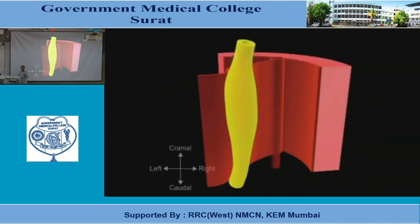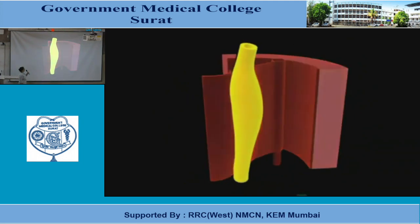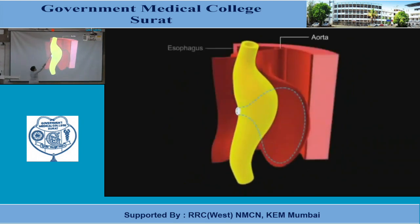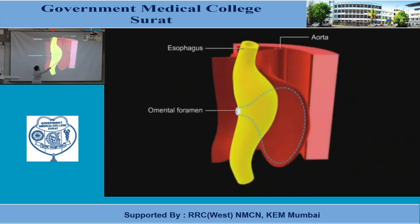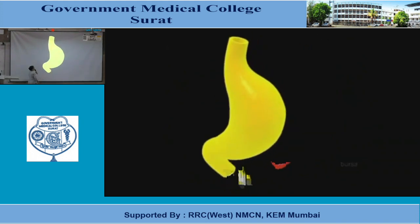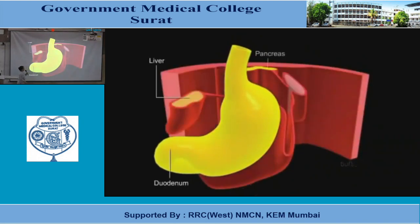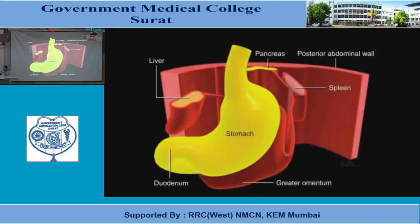You can see how the stomach is formed and how it is affected by rotation of the gut. This part of the stomach is growing more, so it forms the greater curvature. This part is growing less, so it forms the lesser curvature. This is the fully formed stomach — the greater curvature and lesser curvature.